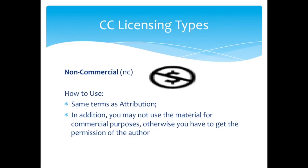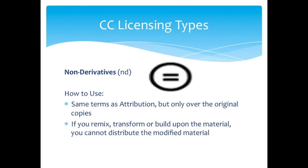The third CC license is the non-commercial license, indicated by the letters 'NC'. This license has the same terms as attribution, but in addition you may not use this material for any commercial purposes — otherwise you have to get the permission of the author. The last is the non-derivatives license, indicated by the letters 'ND'. This license has the same terms as attribution but only over the original copies. That means if you remix, transform, or build upon the material, you can't distribute the modified material — otherwise you have to ask the permission of the originator.